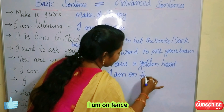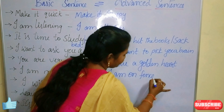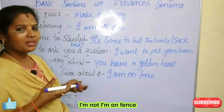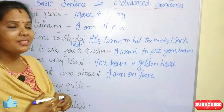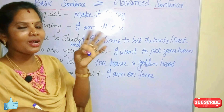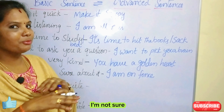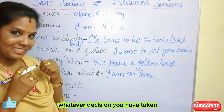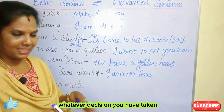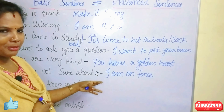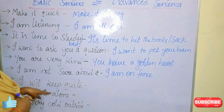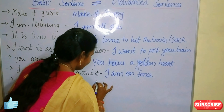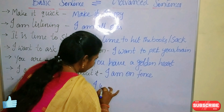Next: 'I am not sure about it.' The advanced version is 'I am on the fence.' When you are on the fence, you are not quite sure — not pretty sure about whatever is being talked about, or about whatever decision has been taken. In any situation where you are unsure, you can say 'I am on the fence.'